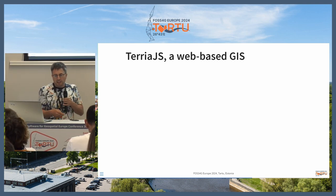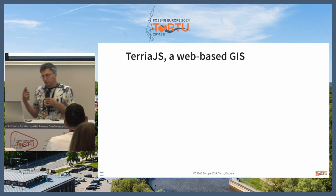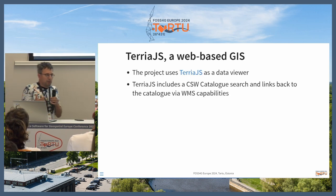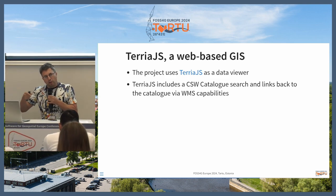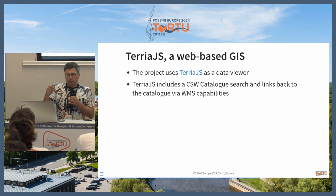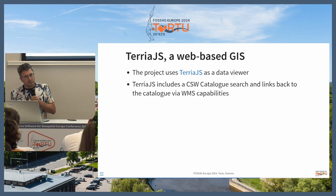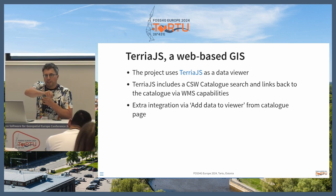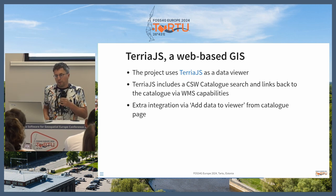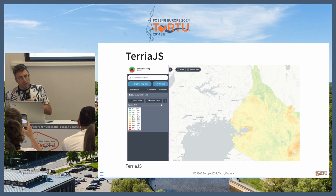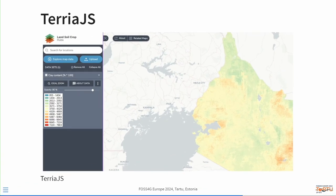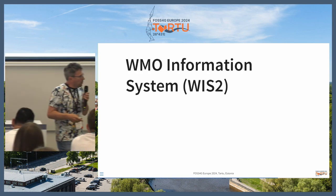On top of that, we have the TerriaJS viewer framework — a client-side, open source project from Australia — which is a fully-featured web-based GIS system with CSW search embedded. You can do a CSW search from TerriaJS to find those records, and vice versa you can go back to the catalog via a link in the WMS capabilities. We also added an extra integration through PyCSW to load a layer found in the catalog directly into TerriaJS. So there's full linkage from the catalog to TerriaJS and from TerriaJS back to the catalog. For example, this is what it looks like in TerriaJS — the dataset found in the catalog opened in the viewer with legend options and many tools.